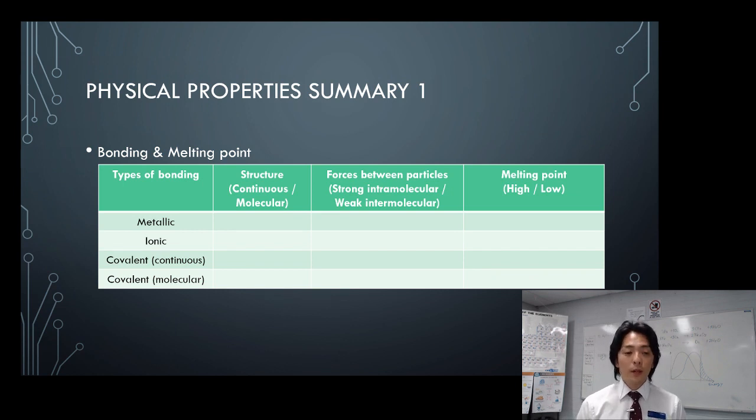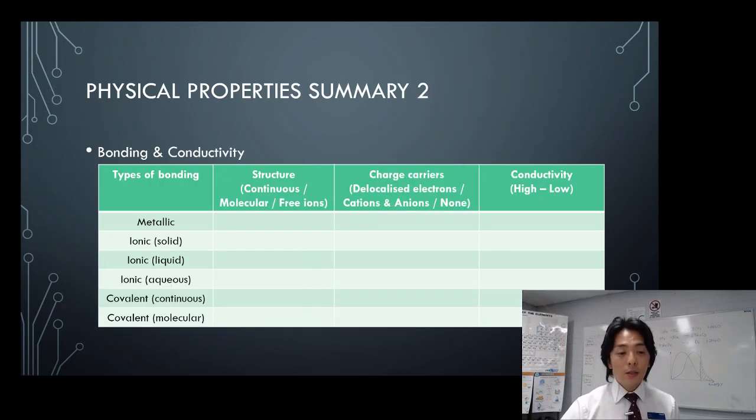So melting point should correspond to what sort of force is between the particles. I hope you can then complete two summary tables here. So if you have got four different types of bonding, what would be the structure? What could be the forces between particles? And what sort of melting point, high or low, you can expect? As well as the conductivity. Types of bonding for conductivity. It depends on the state as well, especially for ionic one.